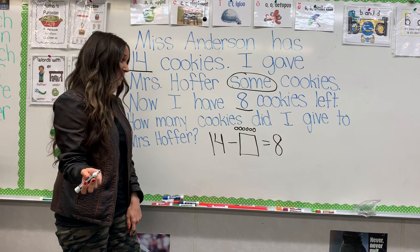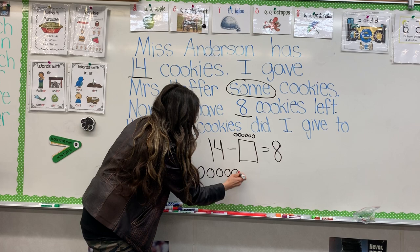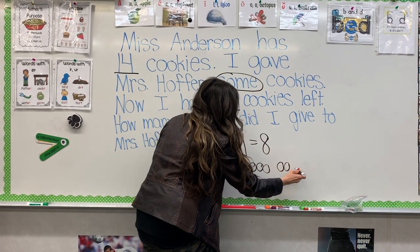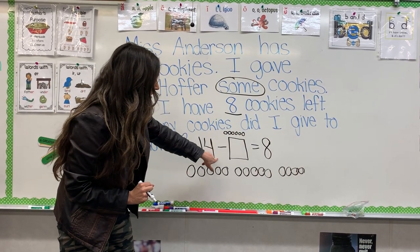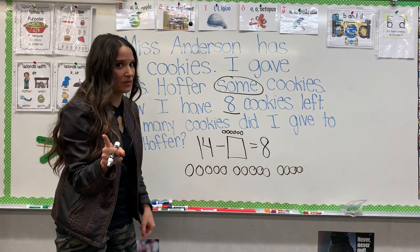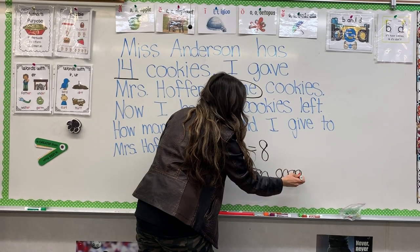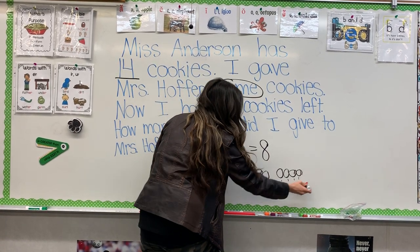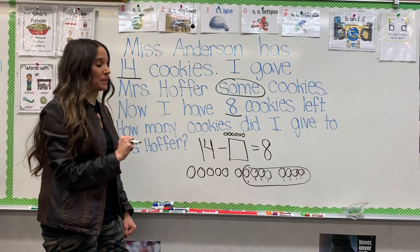Or, you can draw a math mountain. You could draw 14 circles and save eight of them. So I'm going to draw 14 circles and cross them out until I get to eight — I'll circle the eight I have left: one, two, three, four, five, six, seven, eight. These are my eight cookies left. The rest I shared with Mrs. Hopper, and when I count those: one, two, three, four, five, six. Oh, I shared six with Mrs. Hopper!